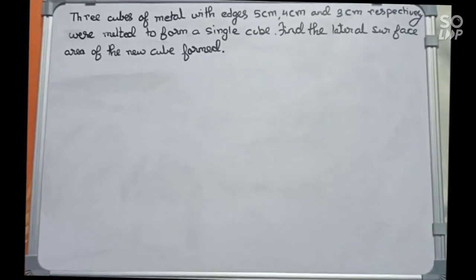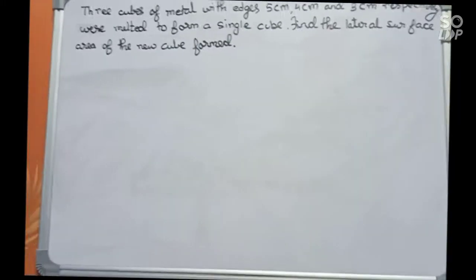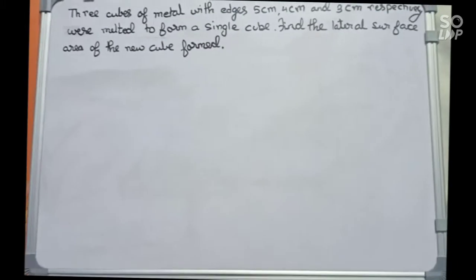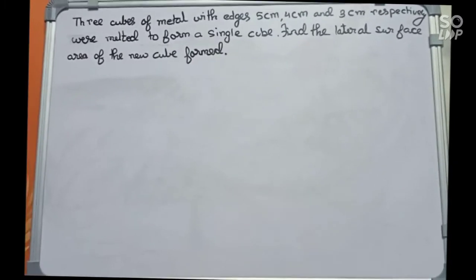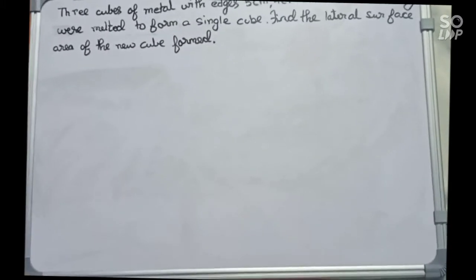Hello guys, welcome to this video. In this video, our question is: three cubes of metal with edges 5 centimeters, 4 centimeters, and 3 centimeters respectively were melted to form a single cube. Find the lateral surface area of the new cube formed.